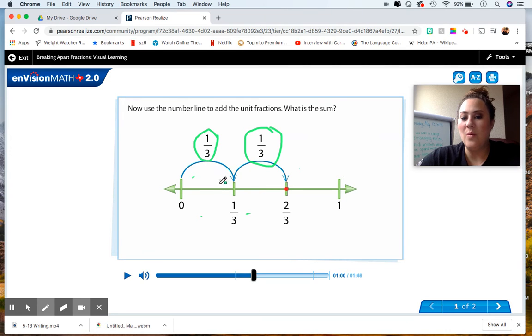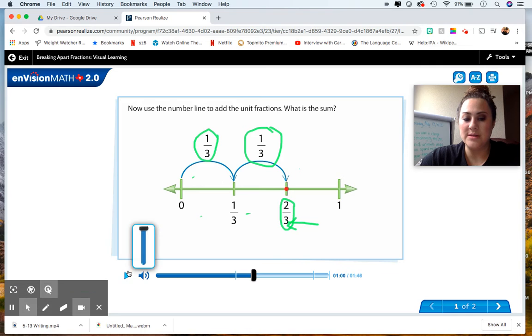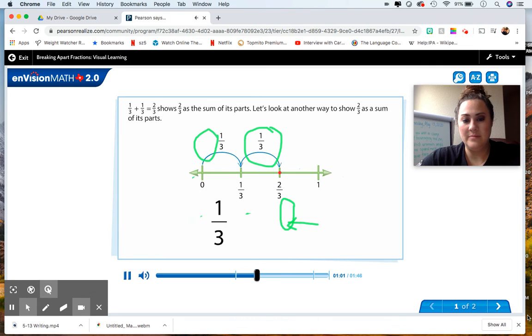Well, one-third plus one-third, if you look here, we have two-thirds. I want you to notice that that denominator stayed the same. The numerator is what changed. What is one plus one? Two. Now we have two-thirds.